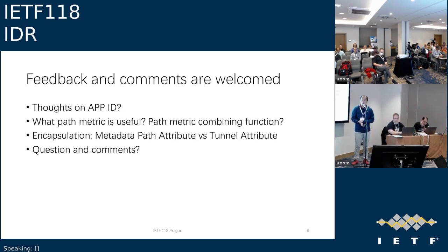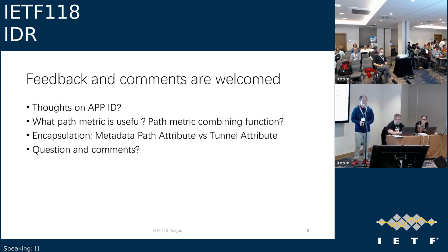That's all I want to present. We now seek feedback on: thoughts on the application ID, what kind of path metric is useful, how to combine different path metrics, and for the encapsulation — do we use the metadata path attribute or tunnel encapsulation attribute? Any questions or comments are welcome.